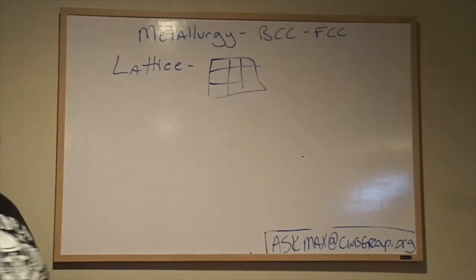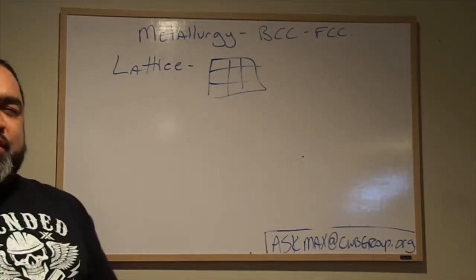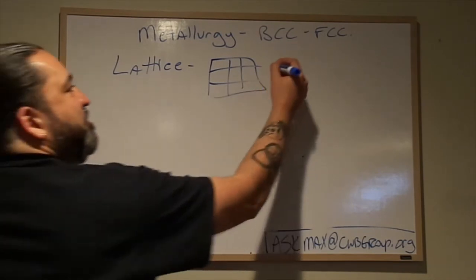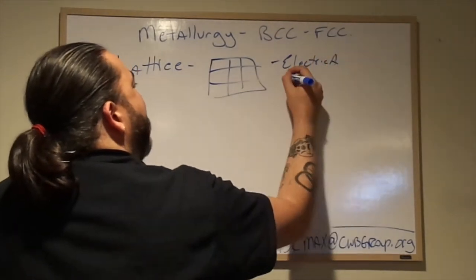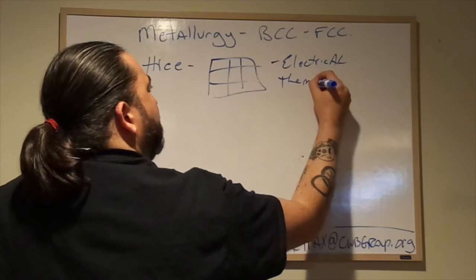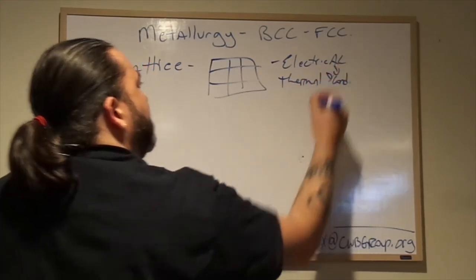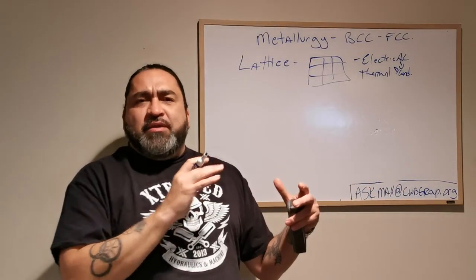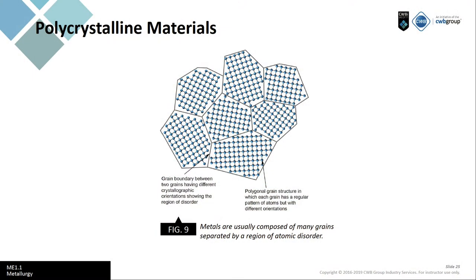It's kind of how atoms line up. An important thing to understand about the lining up of these lattices is that it affects electrical and thermal conductivity. That's because if atoms align a certain way, electricity can get through its path with the least amount of loss and the least amount of resistance.